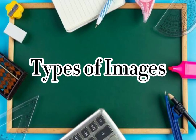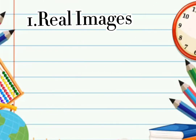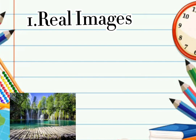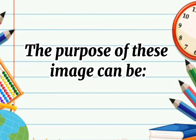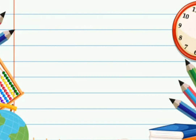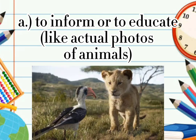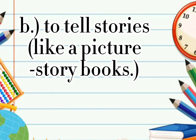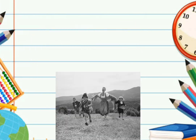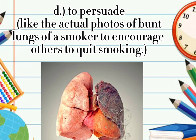Types of Images. 1. Real Images are pictures which depict visuals of objects or happenings that exist in real life. The purpose of this image can be: A. To inform or to educate, like actual photos of animals. B. To tell stories, like picture storybooks. C. To persuade, like actual photos of burnt lungs of a smoker to encourage others to quit smoking.